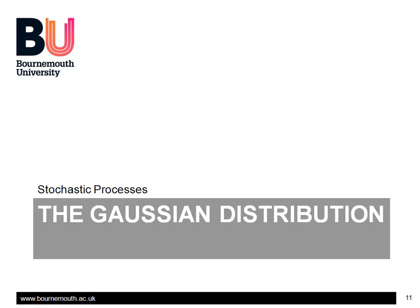Now, there are loads more distributions, such as the Rayleigh distribution found in our mobile phone case study, but by far the most common probability distribution, and the one we'll be using for Kalman filters, is the Gaussian or normal distribution. It has a classic bell-shaped curve.